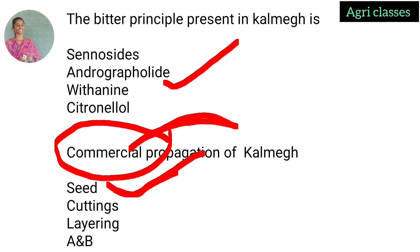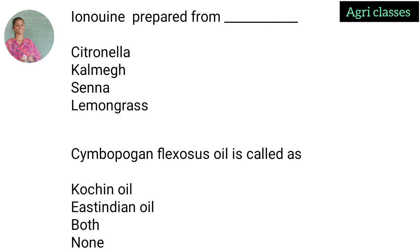Kalmegh, Senna, lemongrass — lemongrass contains citronella oil. From citronella the compound ionone is prepared. Ionone is related to lemongrass, not to citronella plant. Keep that distinction in mind.